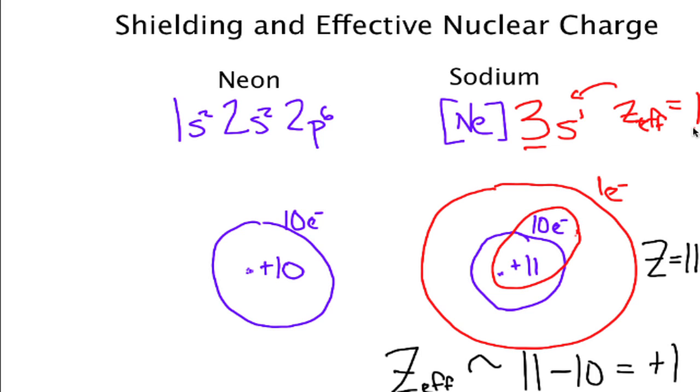Now does it actually work that 10 electrons cancel out 10 protons and the charge is only 1? No. That's a pretty basic idea for what is an incredibly complicated problem. If we try to measure this effective nuclear charge or calculate it quantum mechanically we get something more like two and a half.